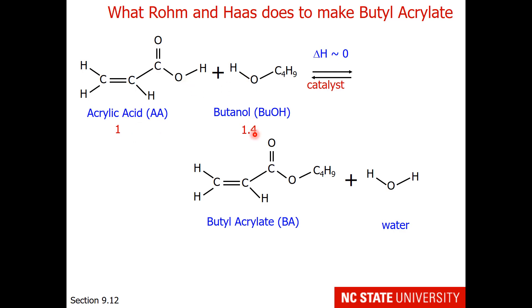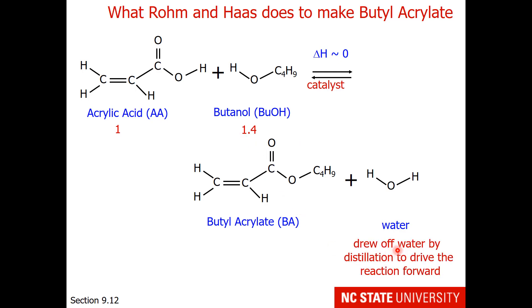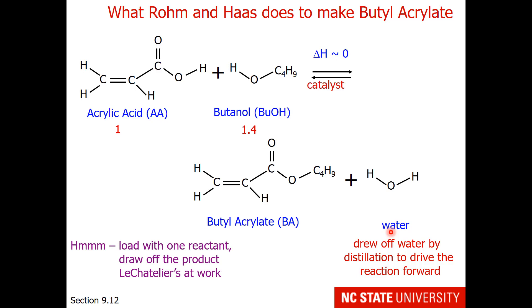But if we add 40% more butanol, we can push this reaction to the right. Butanol is, of course, the less expensive reagent. Another thing we can do is pull the reaction forward by removing product. This reactor distilled the butylacrylate and water into a different container. Butylacrylate and water do not mix — the butylacrylate floats on top. So we had a drain in this reactor chamber to drain away the water and, by doing that, drive the reaction forward. So this is Le Chatelier's at work.